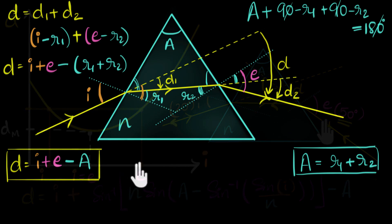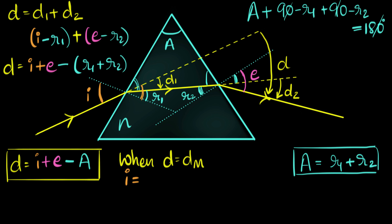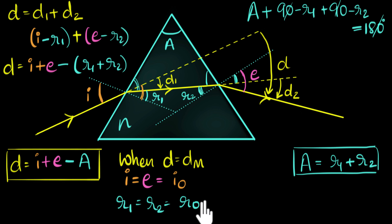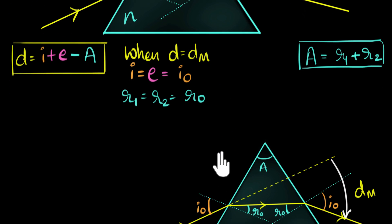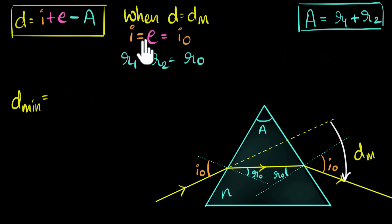So let's go back to our equations. When our angle of deviation hits the minimum value, the angle of incidence has to equal the angle of emergence. Let's call that special angle I₀. If these two angles are equal to each other, then from Snell's law, R1 must also equal R2 — let's call that angle R₀. Now substituting into our equation: D_minimum equals I plus E, but they're both equal to I₀, so that's 2I₀ minus A.